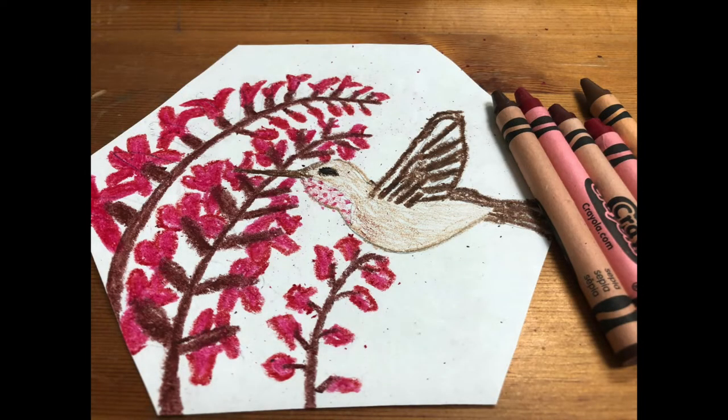Once it's time for the crayon color application, select several hues of colors that are realistic so that your drawing isn't flat. Make sure to blend the colors in your pollinator and habitat as they appear in nature.